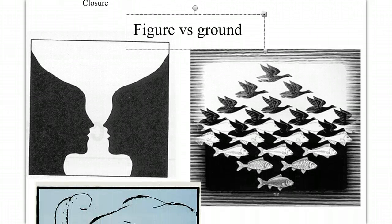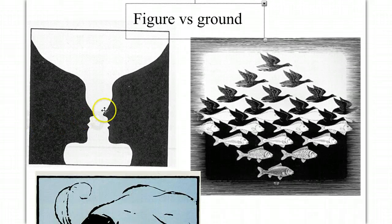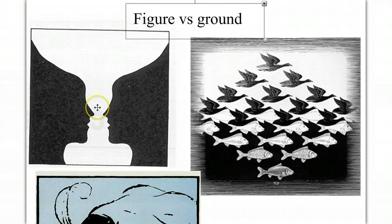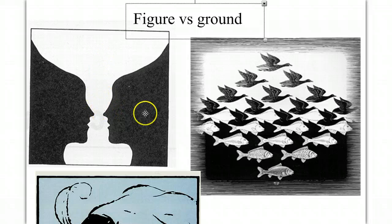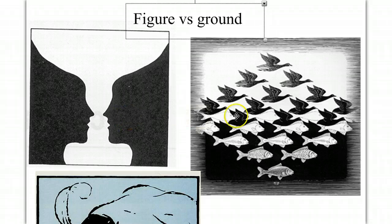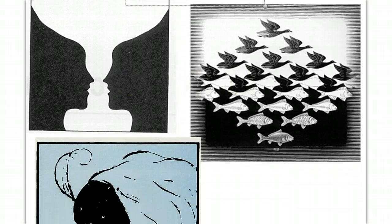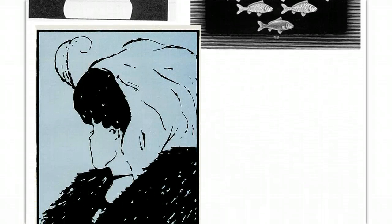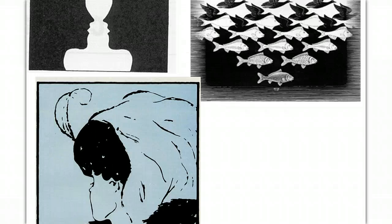When we look at any image, we immediately determine the difference between the foreground and the background or the figure and ground. In this picture, we can either see a vase or we might see two faces, depending on which way our brain interprets the figure versus the ground. We'll look at a number of different illusions, but this is the first thing we do in our visual process. We distinguish the figure from the background.